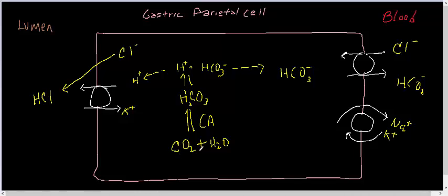Intracellular carbon dioxide combines with water in the presence of carbonic anhydrase to produce carbonic acid, which dissociates into hydrogen ion and bicarbonate ion. The hydrogen ion is secreted into the lumen via a hydrogen potassium ATPase pump.